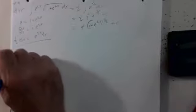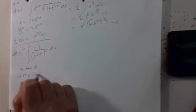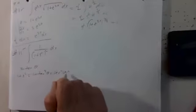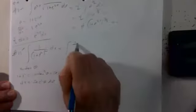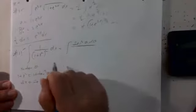Let me do number 15. Number 15 is the integral of 1 over (1 plus x squared) squared dx, and it tells us to make the substitution x equal tangent theta. Now 1 plus x squared is 1 plus tangent squared theta, which is secant squared theta, which is 1 over cosine squared theta. And dx is secant squared theta d theta. When I substitute for dx, I get secant squared theta d theta over secant squared theta squared.